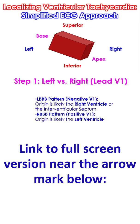Step 1 – Left vs Right, based on lead V1. This is based on the bundle branch block morphology. An LBBB pattern — negative in V1 — indicates the origin is likely the right ventricle or the interventricular septum. An RBBB pattern — positive in V1 — indicates the origin is likely in the left ventricle.